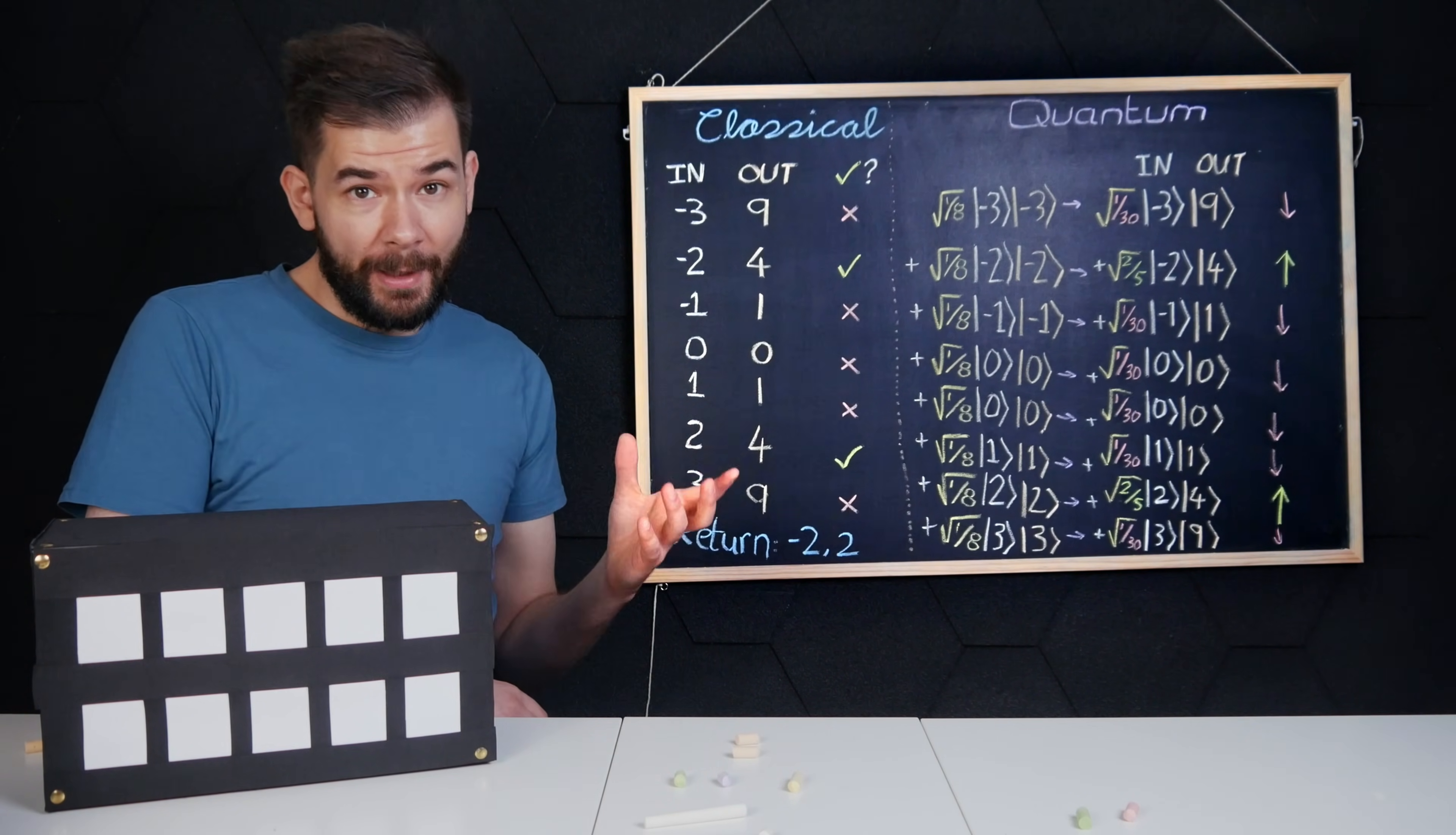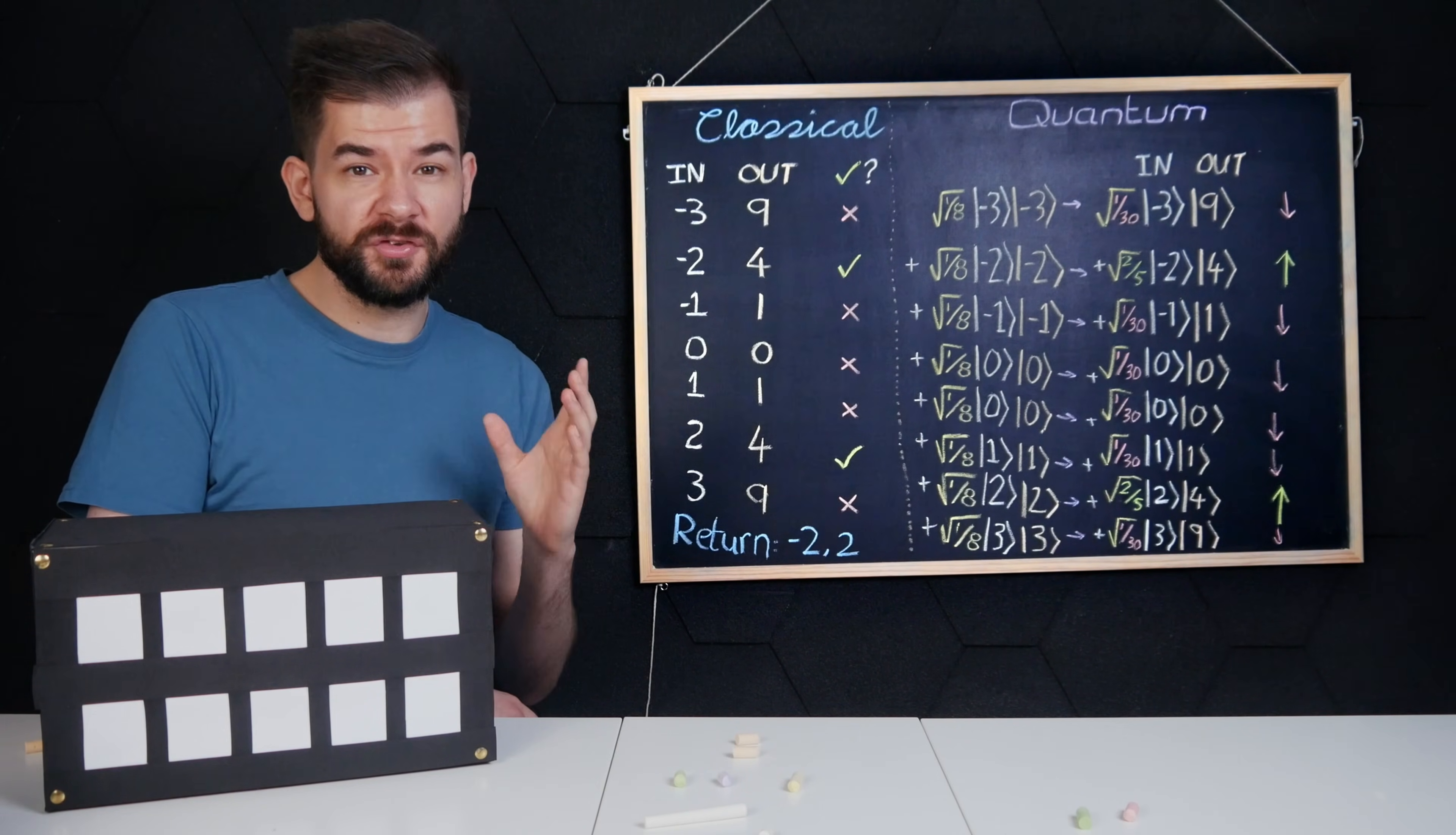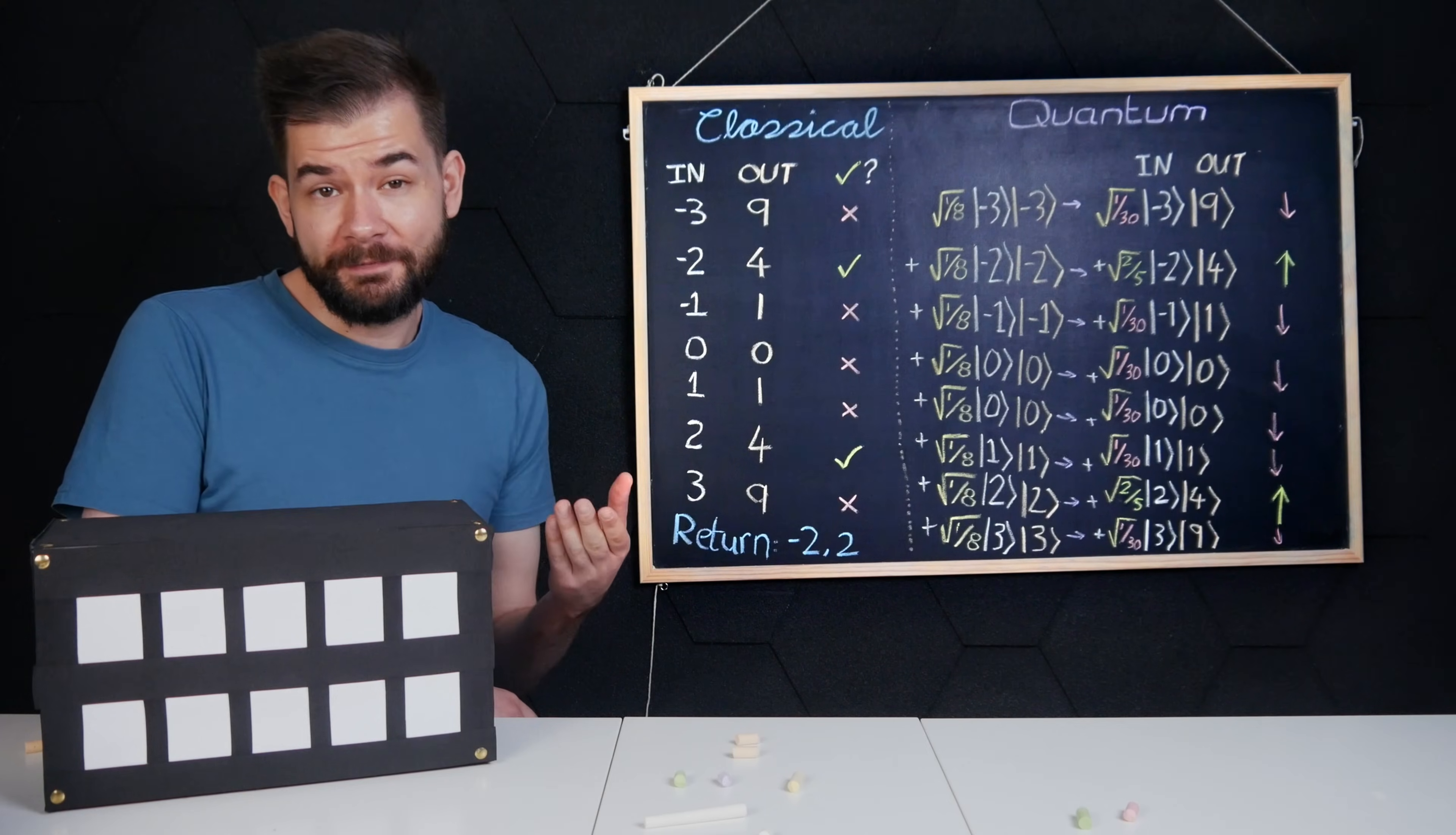One powerful amirite function is called a diffuser, which is used as part of Grover's algorithm to speed up brute force computations to an extraordinary degree. But even this doesn't help with many cryptographic applications.